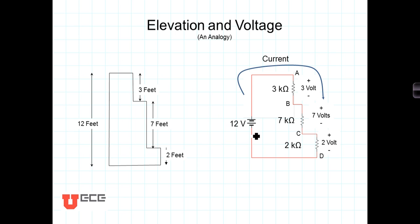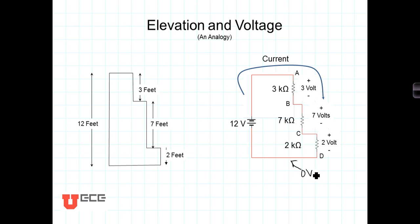Now for the voltage analogy: here we have a 12-volt battery. The voltage on one side of the battery is 12 volts higher than the other side. Defining the lower side as zero volts, we climb up two volts, then another seven volts to reach nine volts, then another three volts to reach 12 volts.